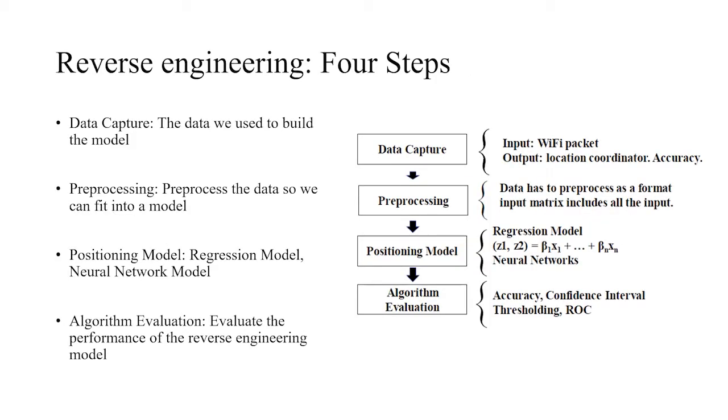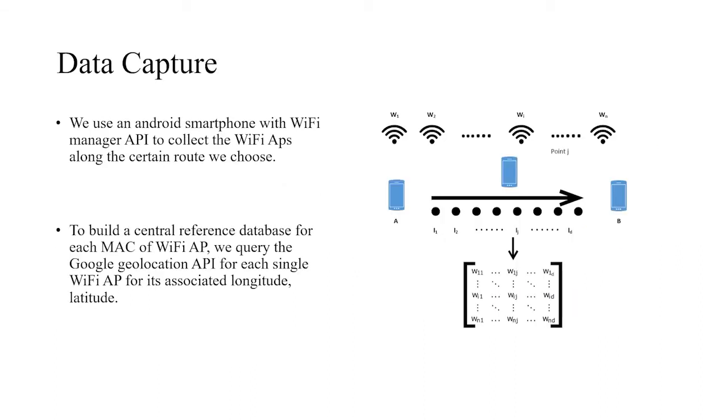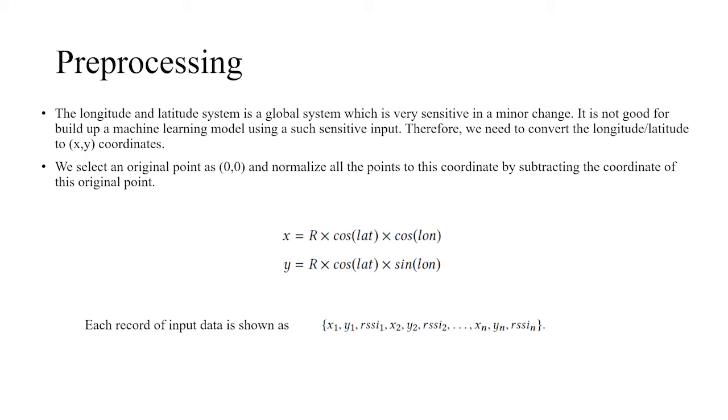There are four steps for the reverse engineering model: data capture, preprocessing, positioning model, and algorithm evaluation. We capture data using WiFi manager and capture information like MAC address, RSSI, and other information. This picture is how we collect all the WiFi information around a route. Then we preprocess the longitude and latitude to XY coordinates using the formula shown here, normalize to the original point, and the final record of input data is shown here.